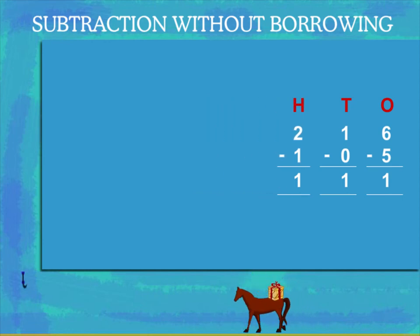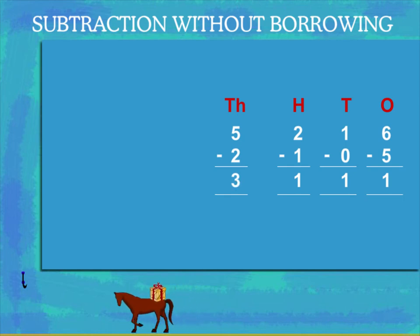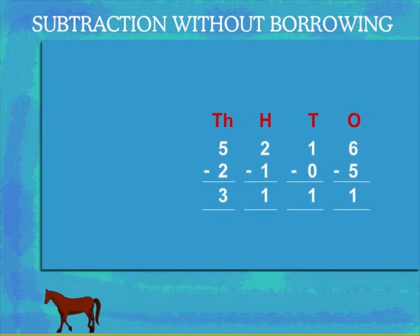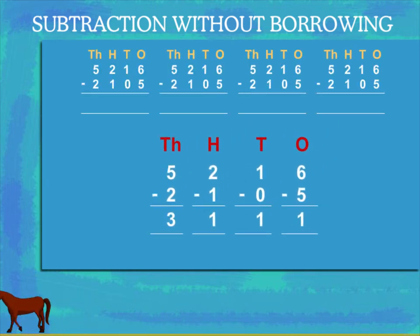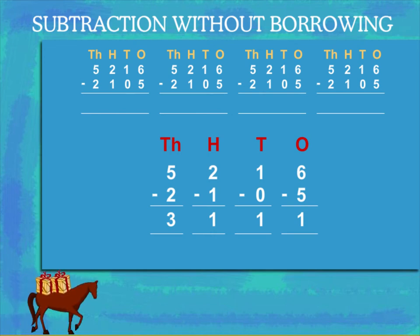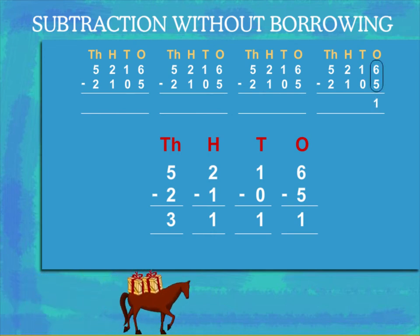The thousands: five thousands minus two thousands equals three thousands. Joining all of this together, it becomes five thousand two hundred and sixteen minus two thousand one hundred and five. Six ones minus five ones is one.